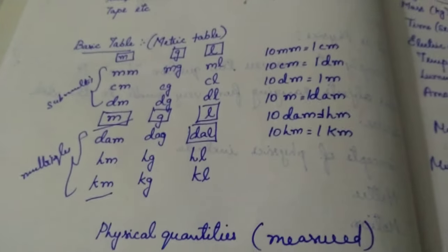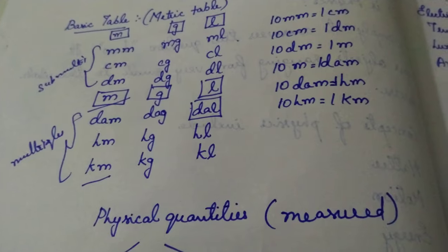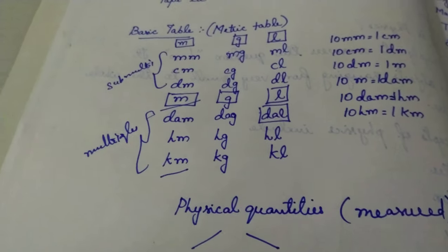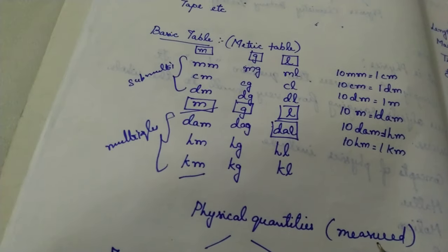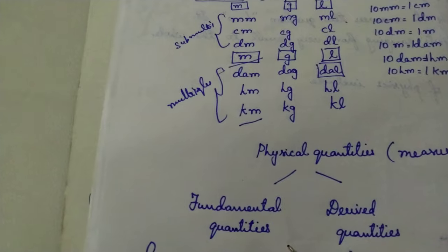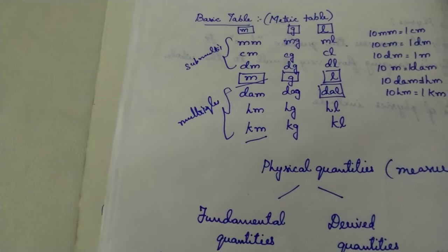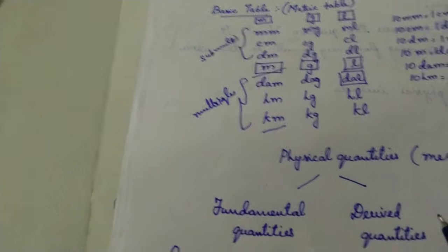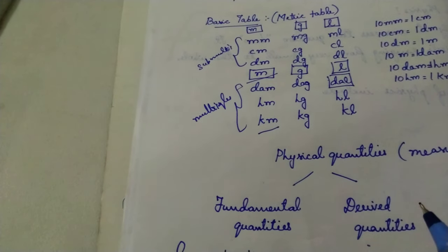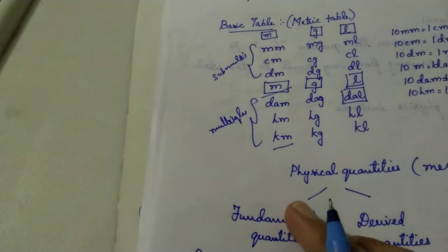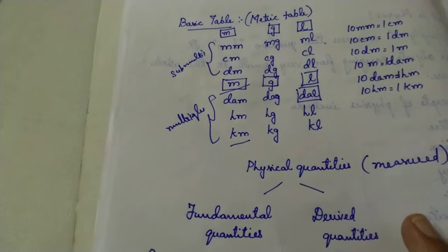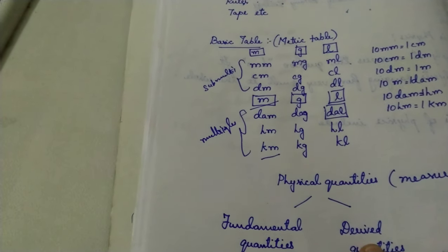Next we are going to cover physical quantities. Physical quantities are quantities that can be measured — that is, the quantities we are able to measure are called physical quantities. Physical quantities are of two types: fundamental quantities and derived quantities. Fundamental quantities are quantities which cannot be obtained from any other quantities — they are basic or unique quantities. Derived quantities are quantities that are obtained from fundamental quantities.